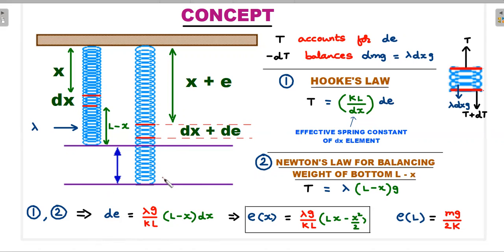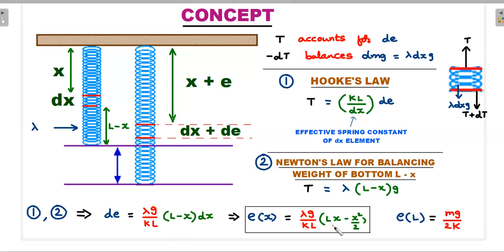Integrating d over the entire spring would give the total extension, which is mg/2k — but that wasn't asked. Instead, we integrate d from 0 to x only, which finds the extension in the top x-portion as a function of x. So e itself is a function of x, obtained by integrating from 0 to x. This expression for e(x) will be used in calculating the displacement of center of mass on the next page.